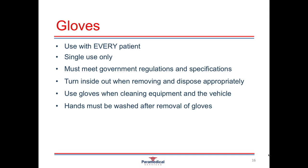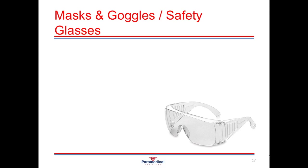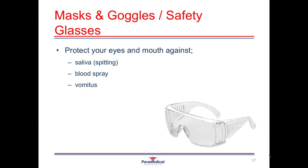Masks and goggles or safety glasses are very important for providing protection to your eyes and mouth. They provide protection against things such as saliva, blood spray, vomitus, or any other type of body fluid. The eyes and the mouth are an easy portal of entry for infection into the body, so these provide a barrier and stop that from occurring. It's very important to keep your safety goggles on you at all times, particularly when you're anticipating any splashes of body fluids or blood.